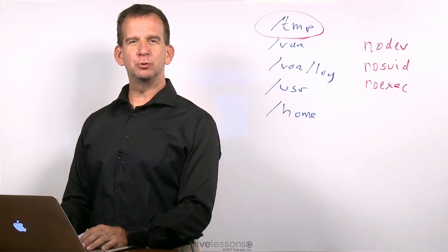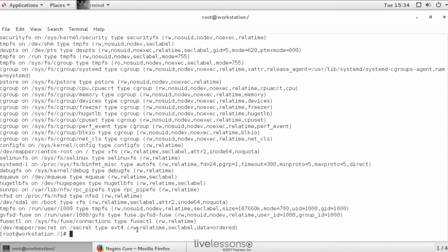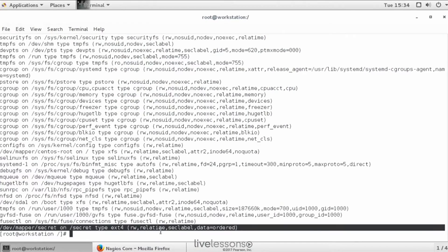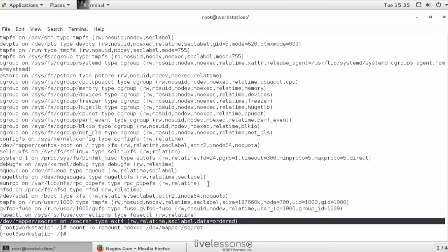Let me do a demo with these mount options. So we have an already mounted file system, which is the devmapper secret file system. I want to show you mount-o remount, noexec on devmapper secret, which is the easiest way to put an additional mount option to the file system.